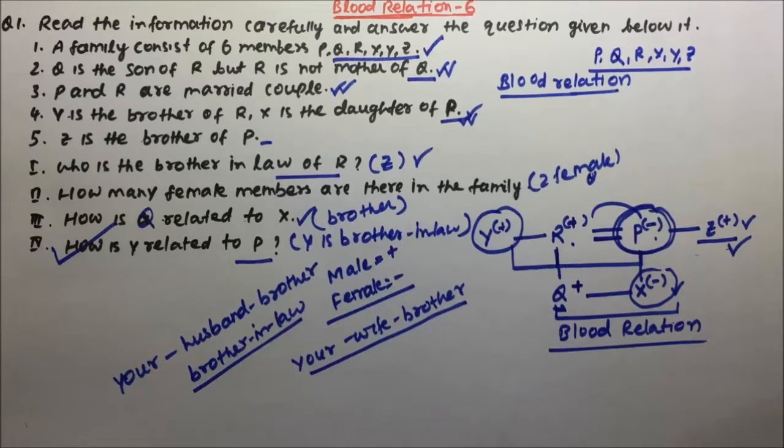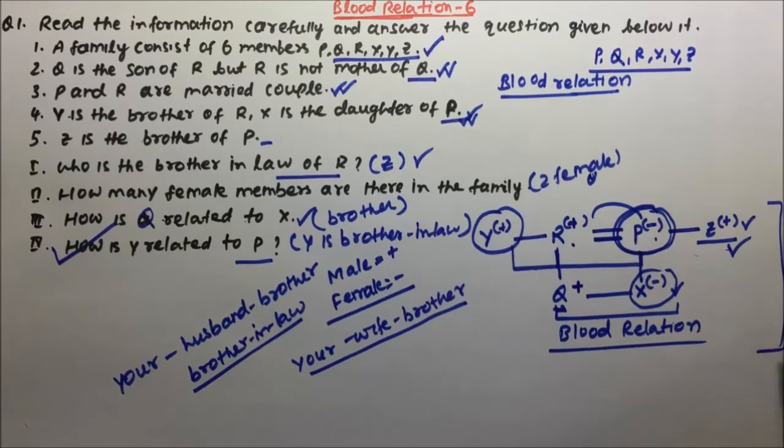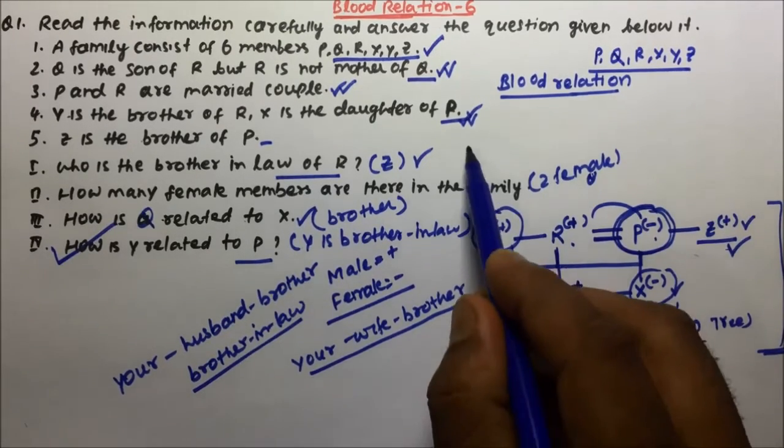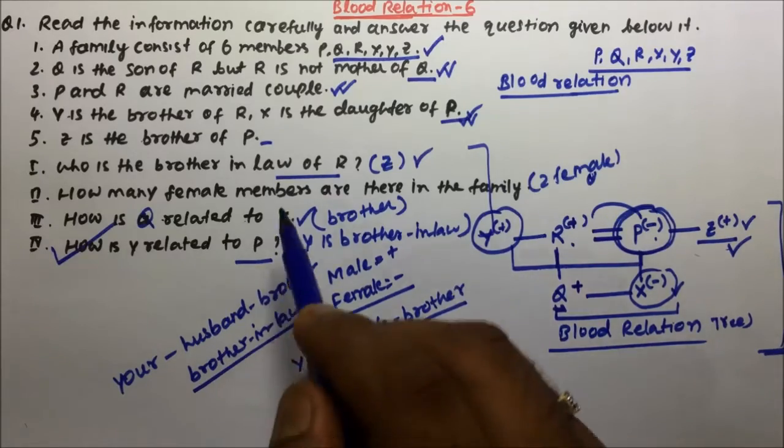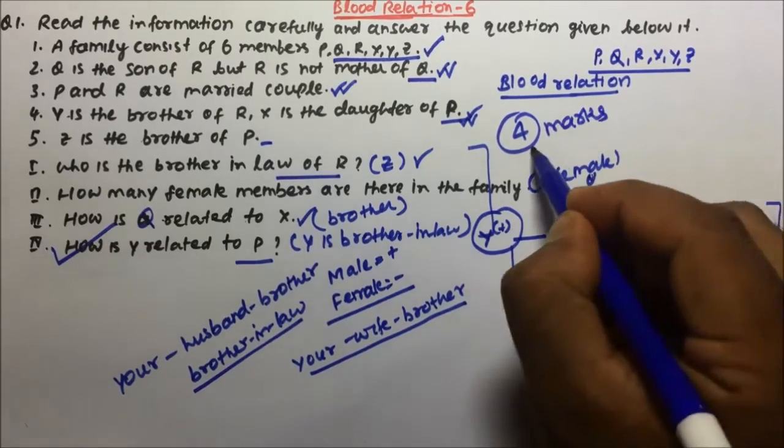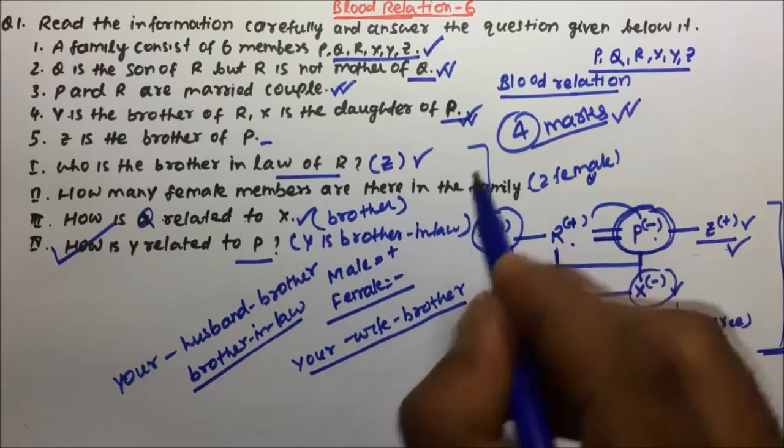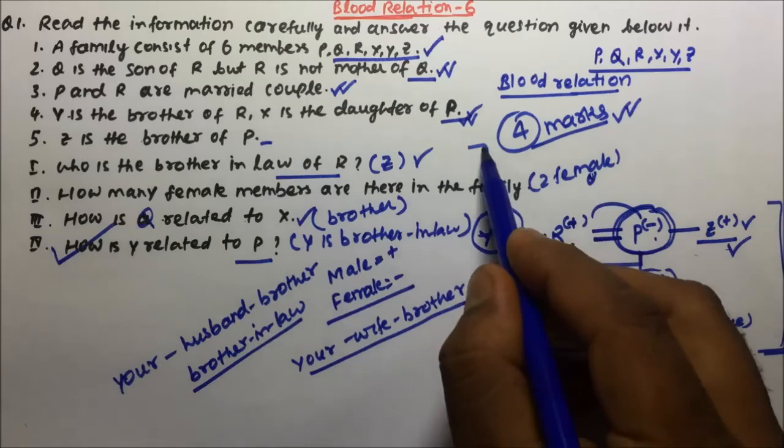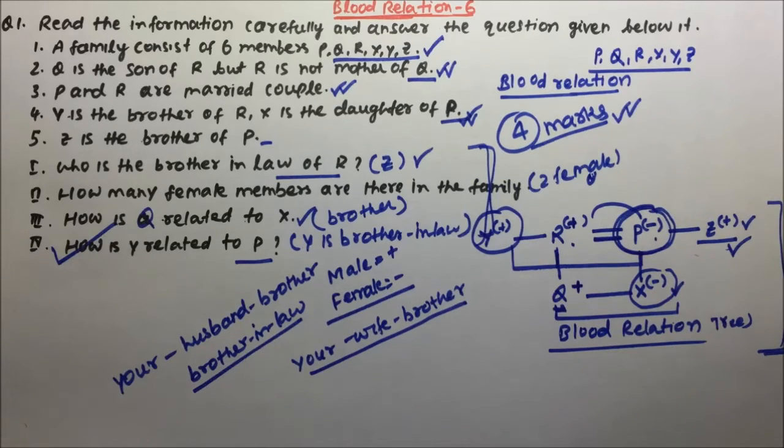So once you draw the blood relation correctly, then after that you can answer the question in fraction of second. See, the blood relation tree is very much important. If you are doing any mistake here then all the four questions will become wrong. See, if you solve this small puzzle you get four marks in the exam, and from this small puzzle if you are scoring four marks then it will be helpful to crack the exam. So blood relation tree very confidently you have to draw it correctly and then only you will be able to answer all the questions correctly.